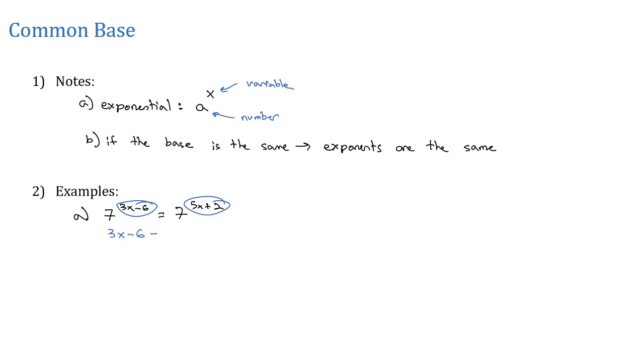And we know how to solve this equation. We can move all the variables to one side by subtracting 3x from both sides. Negative 6 equals 2x plus 2. Get the numbers on the other side by subtracting 2. So negative 8 equals 2x. And then finally dividing both sides by 2 so that x is equal to negative 4.